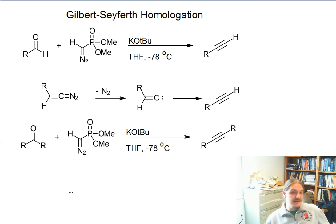In this case, the Gilbert-Seyferth reaction starts with an aldehyde and reacts that aldehyde with this diazomethyl phosphonate, a weird looking compound here. Weaker base, potassium tert-butoxide, lower temperature minus 78 degrees Celsius.